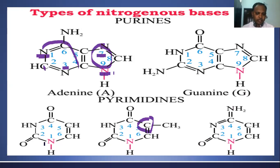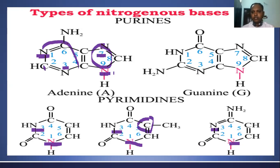The nitrogen atoms in pyrimidine are at position number one and three. Purine bases have two ring structures — one five-member ring and one six-member ring — and four nitrogen atoms in their rings. Pyrimidine bases are single heterocyclic compounds with only a six-member ring and contain two nitrogen atoms at positions one and three.